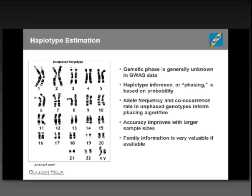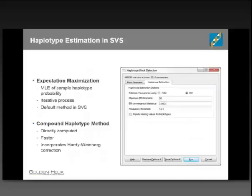Within SVS, there are two different algorithmic options for determining haplotypes. The default method is the EM algorithm, or expectation maximization, which gives a maximum likelihood estimate of sample haplotype probability through an iterative sampling procedure to identify the best fit. The second method available is the compound haplotype method, which is a bit faster because it's directly computed. It may in some cases not be quite as accurate as EM, but it's also an interesting option to try.